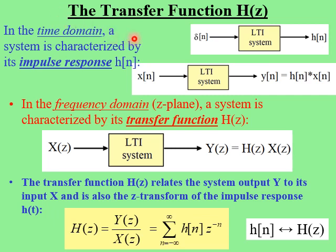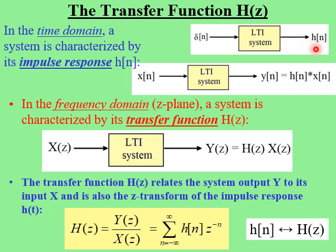Recall that in the time domain, a system is completely characterized by its so-called impulse response, H of n. The impulse response is what the system outputs when the input is a simple impulse or delta function. So we have a delta function going into our LTI system, and the system responds and produces an output, which is called H of n, the impulse response.